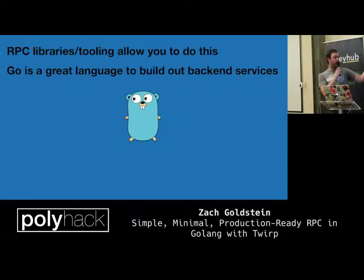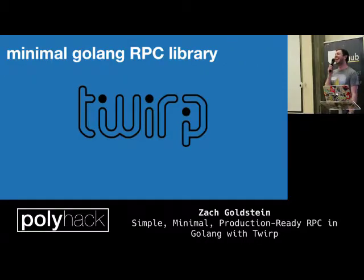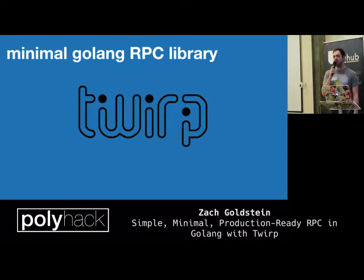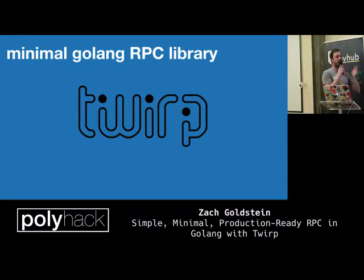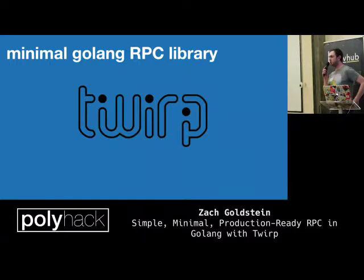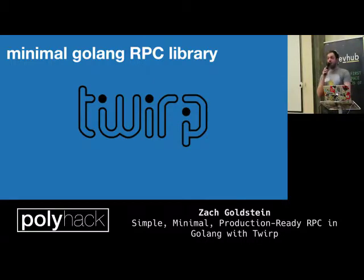Twirp actually does this. RPC libraries and their tooling allow you to do it, and Go is a particularly good language for building back-end services. Twirp is a library released by Twitch. They started out using gRPC, which is another RPC framework in Go, but had some frustrations with it, so they stripped it down and released their own library called Twirp. It was open-sourced a couple of months ago, just before Christmas.